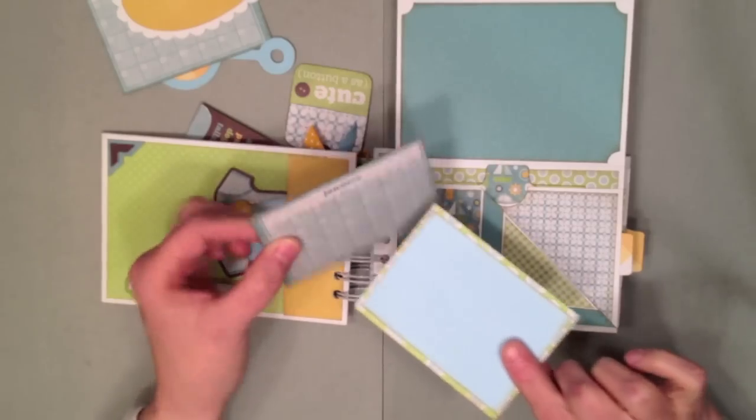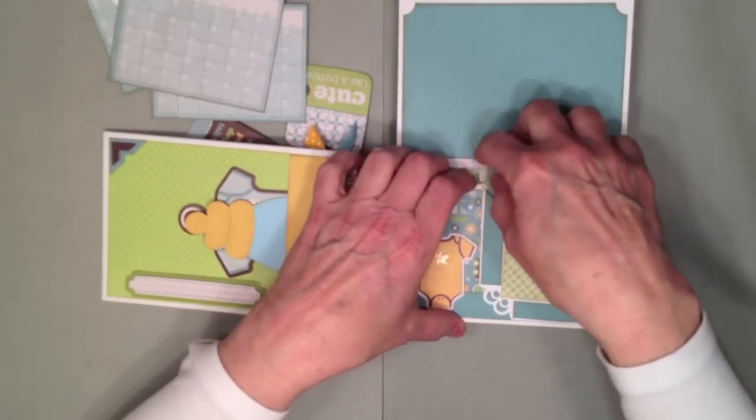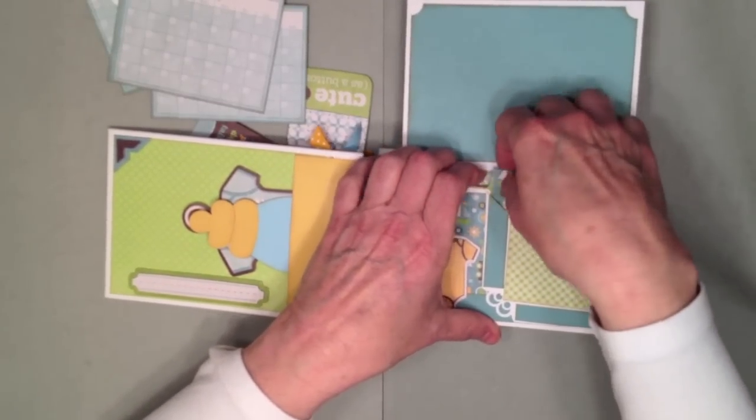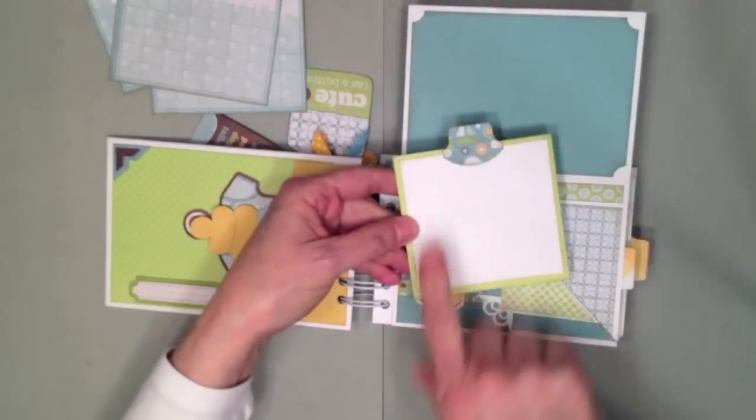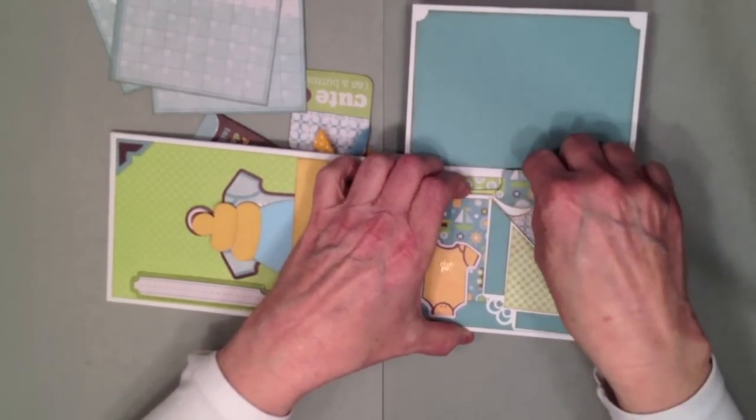This flips up and you have a place for a really nice photo here and then this is another chipboard piece that I put here. You have another pocket here and inside this pocket I have two more of the calendar sheets with the design papers for photo mats on the back so you can put the baby's picture for the month of January and the month of February on there.